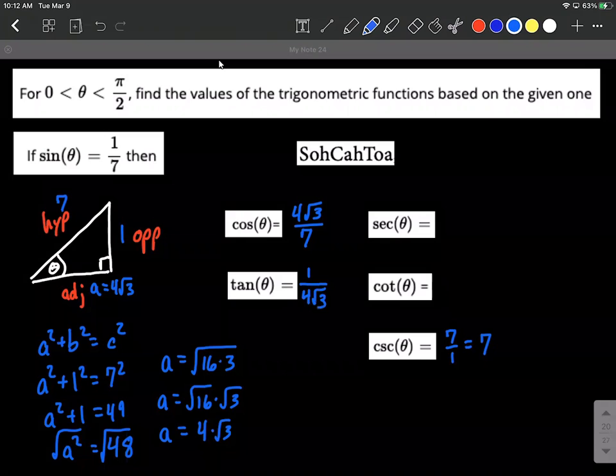And we could rationalize this by multiplying numerator and denominator by the square root of 3. It'll be a little bit cleaner answer, although I think computer systems tend to be okay with leaving it as with the radical in the denominator. So square root of 3 over 4 times 3 will be square root of 3 over 12 for the tangent.